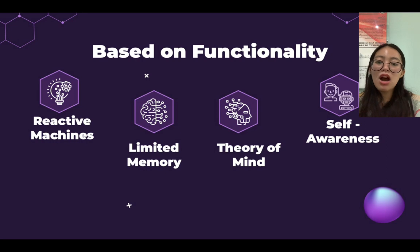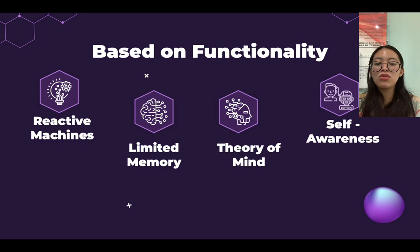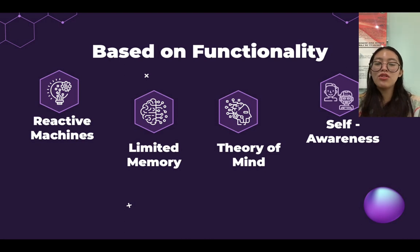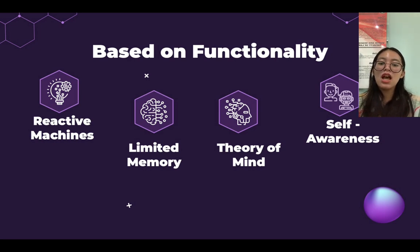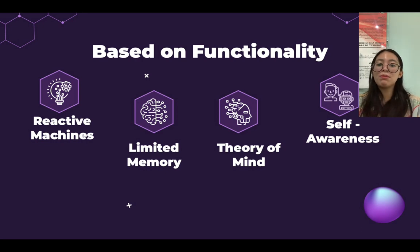The third one is theory of mind. Theory of mind AI should understand human emotions, people, beliefs, and be able to interact socially like humans. The last one is self-awareness. Self-awareness AI is the future of artificial intelligence. These machines will be super intelligent and will have their own consciousness, sentiments, and self-awareness, making them smarter than the human mind.